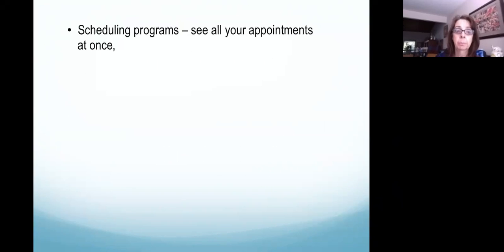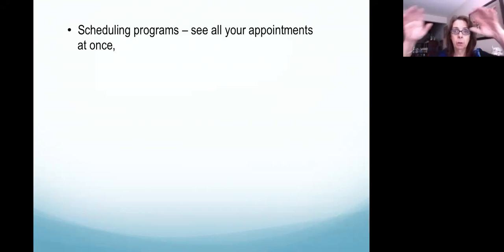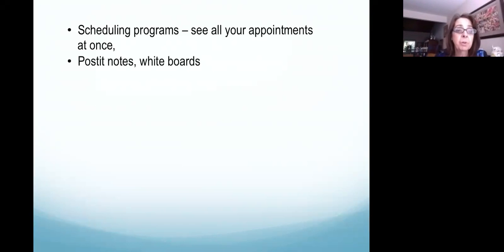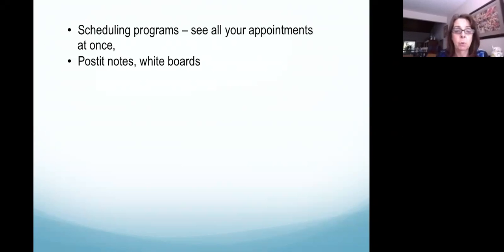For a visual processor, when scheduling, you want to see all the appointments at once — not just the next appointment, but the whole day, the whole week, maybe even the whole month. A month-at-a-glance calendar is really helpful because you can see the whole picture of what's coming up. Post-it notes and whiteboards are really good for you — putting a schedule up on the wall with different colored post-it notes or big whiteboard calendars is very visual and very helpful.